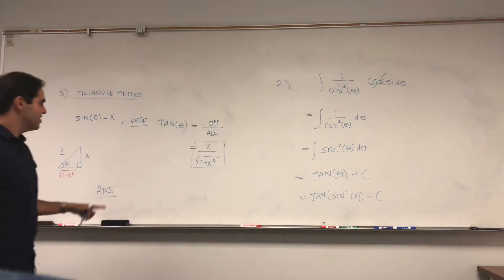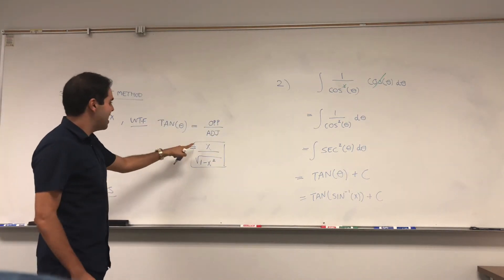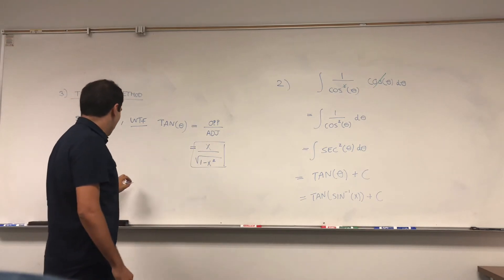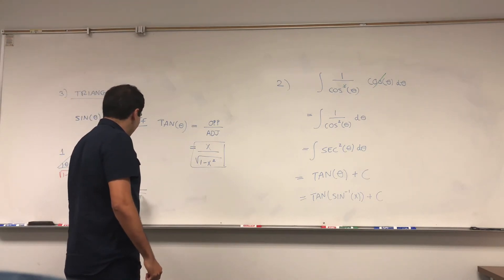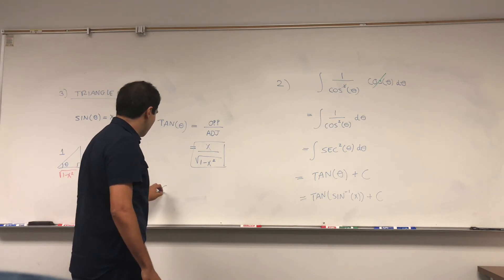The answer is just tangent of theta plus a constant. Tangent of theta is x over square root of 1 minus x squared, which is x over square root of 1 minus x squared plus a constant.